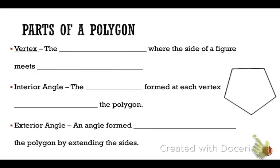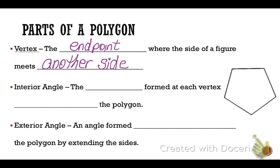Now that we know what polygons are, let's talk about the parts of a polygon. A vertex is the endpoint where the side of a figure meets another side. On our shape here, this is a vertex.